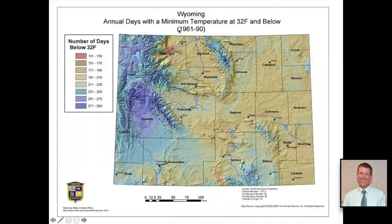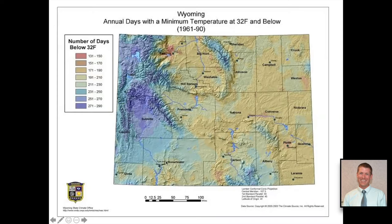This map gives us a better idea of what we're looking at — the minimum temperature at 32 degrees Fahrenheit and below, showing annual days at or below that threshold. As we can see, for certain parts of the state — especially the western side, places in Carbon and Albany County, up around Yellowstone and the Bighorn Mountains — we have a lot of days without ideal temperatures for growing vegetables.